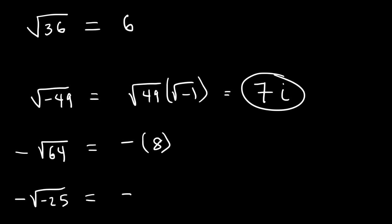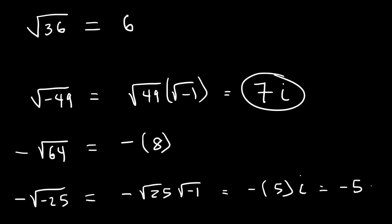For negative square root of negative 25, we have negative square root of 25 times the square root of negative 1. The square root of 25 is positive 5, and the square root of negative 1 is i. So the final answer is negative 5i.